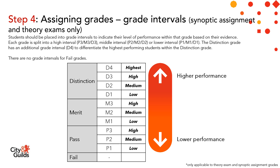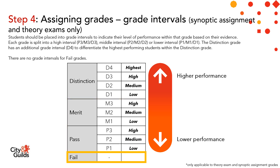There are four grade intervals for distinction: highest (D4), high (D3), middle (D2), and low (D1). For pass and merit grades, there are only three grade intervals: high (P3 or M3), middle (P2 or M2), and low (P1 or M1). Students don't need to be differentiated into grade intervals for a fail grade. This graphic shows how we can view this as a sliding scale of performance, with P1 being the lower end of the pass grade right through to D4, which is the highest performing distinction grade.